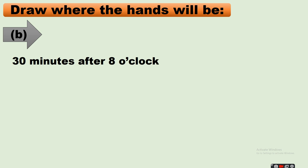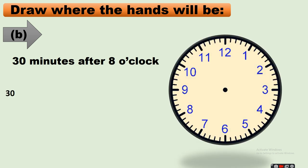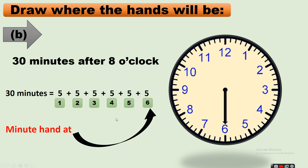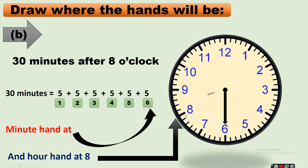Next: 30 minutes after 8 o'clock. 30 minutes equals 5 plus 5 plus 5 plus 5 plus 5 plus 5 — count 1, 2, 3, 4, 5, 6 — that means the minute hand shows 6. The hour hand is at 8, but since it is half an hour later, the hour hand will be midway between 8 and 9.